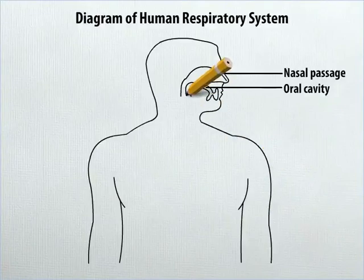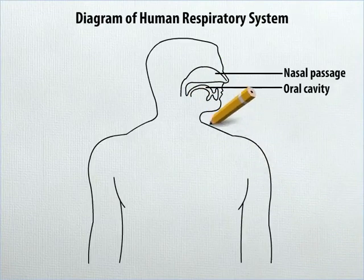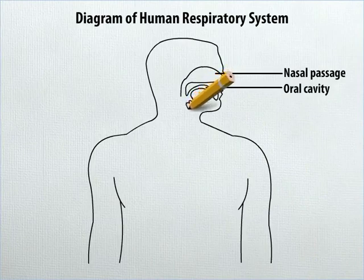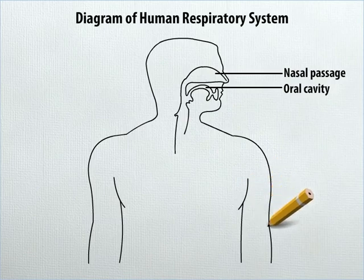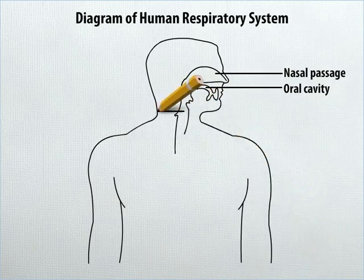Join the nasal passage and oral cavity to form a tube and extend it downwards in this way. Label the portion of the tube in the neck as pharynx.